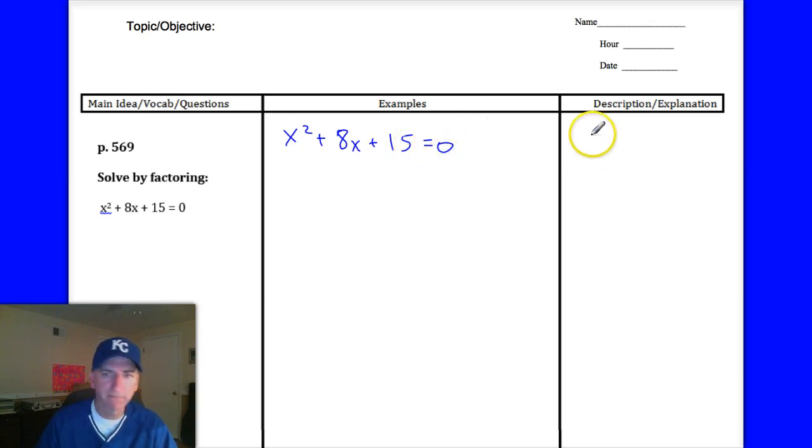And the first condition that you have to check is that it must be equal to zero. If that's not equal to zero, you have to make it equal to zero. We'll see that in the second one right there.